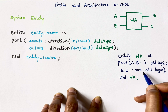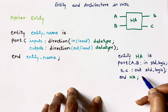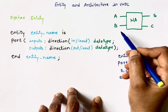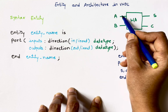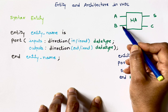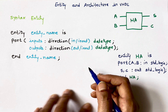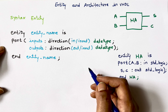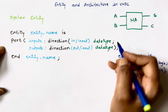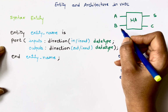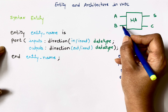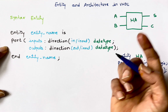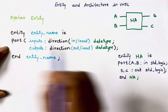Now I'll write code for a half adder which has four-bit inputs. Both input A and input B are four bits, sum is also four bits, and carry is of course one bit.